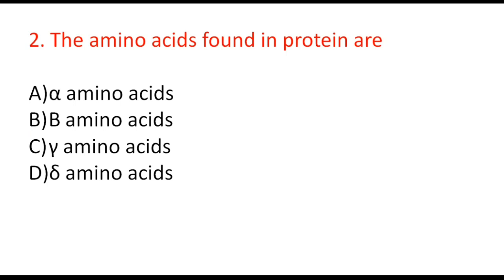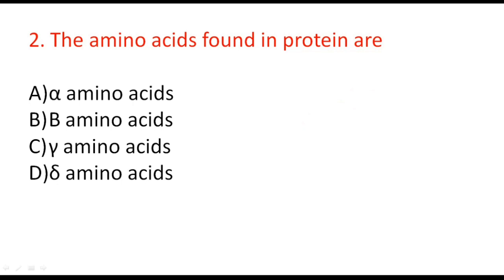Next question: the amino acids found in proteins are alpha amino acids, beta amino acids, gamma amino acids, or delta amino acids? The amino acids commonly present in proteins are alpha amino acids. In an alpha amino acid, the NH2 group and COOH group are directly attached to the same carbon atom — the alpha carbon. If there were one more CH2 group, it would become a beta amino acid. So the correct option is A.